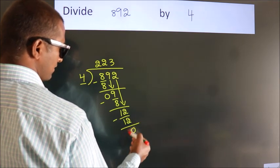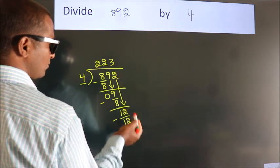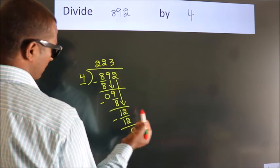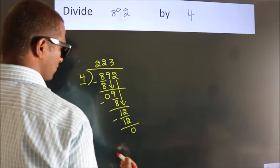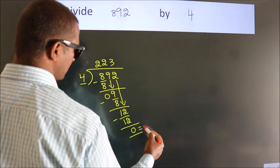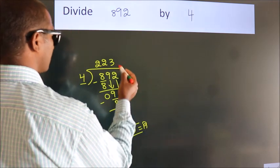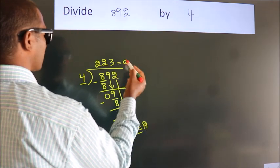After this, there are no more numbers to bring down, so we stop here. This is our remainder. This is our quotient.